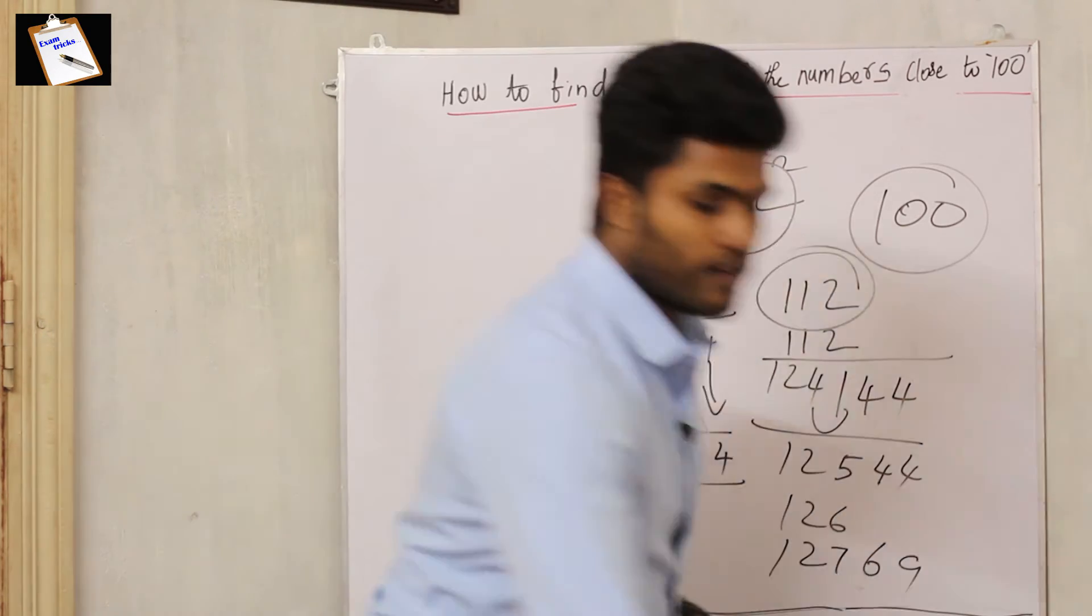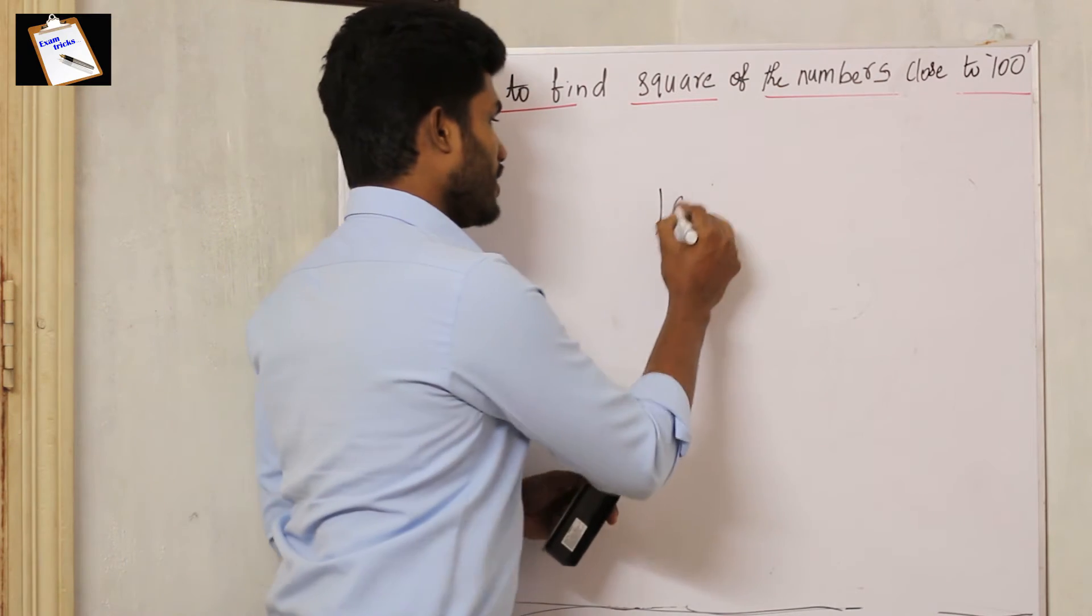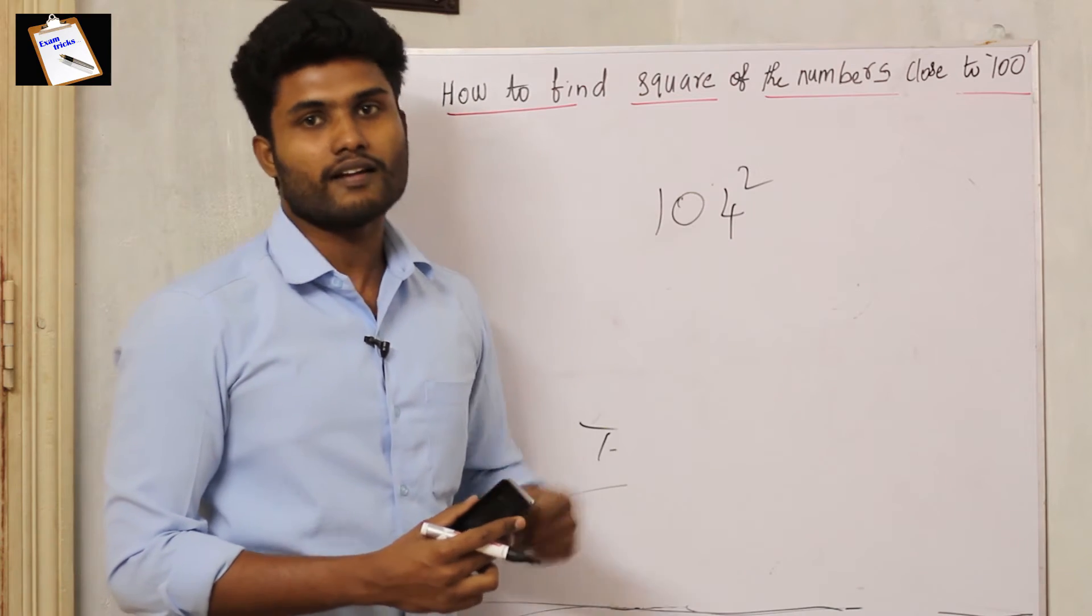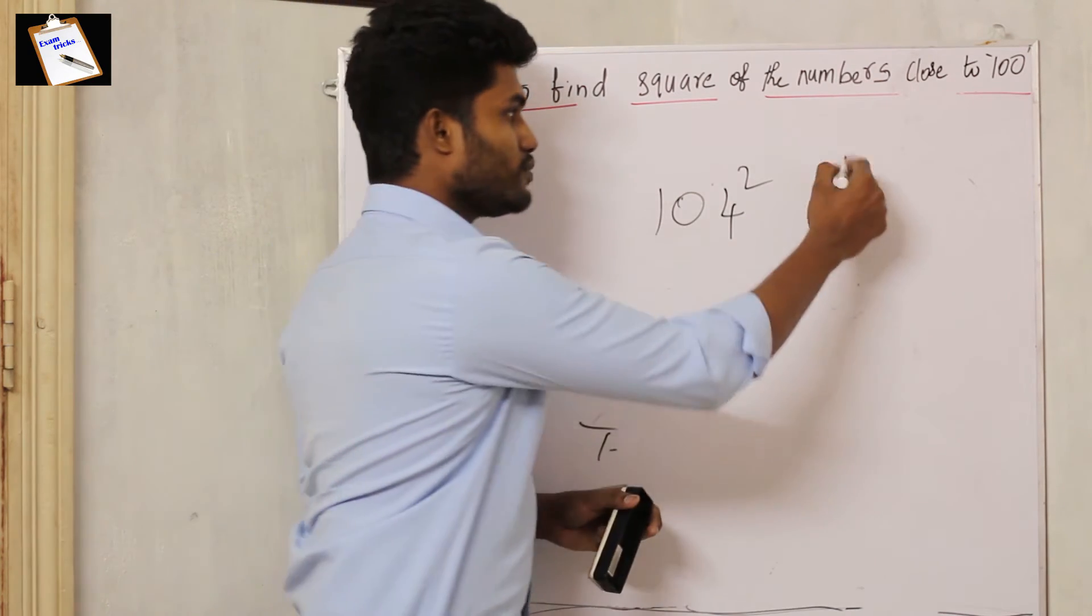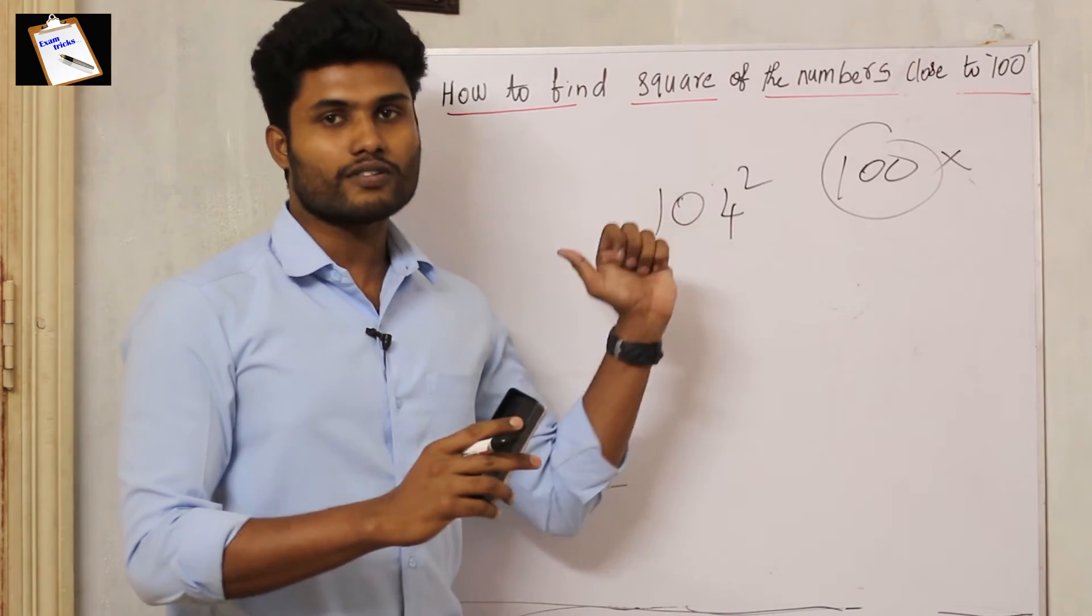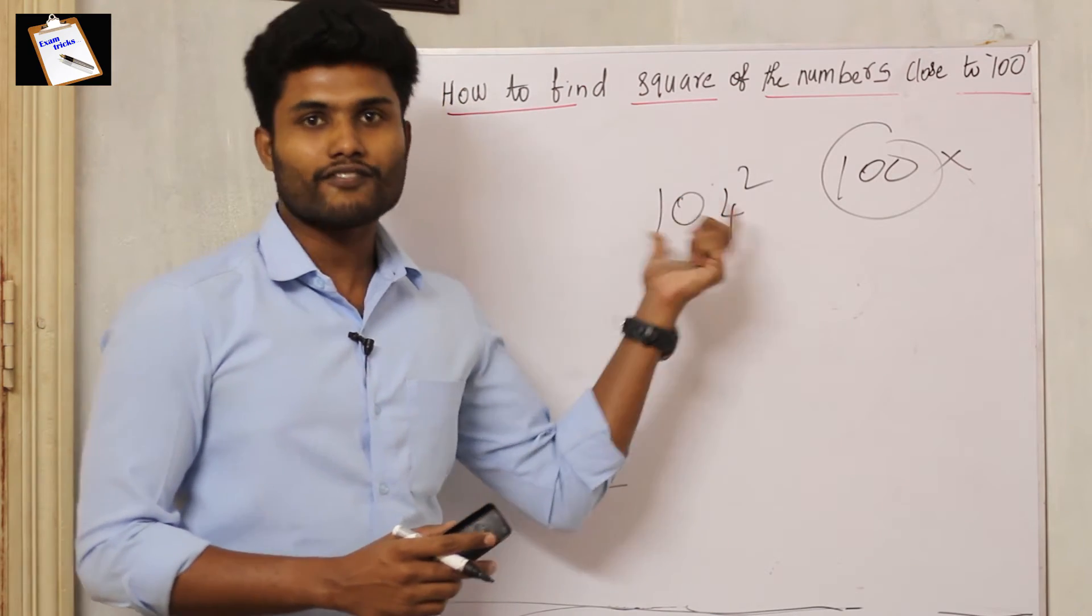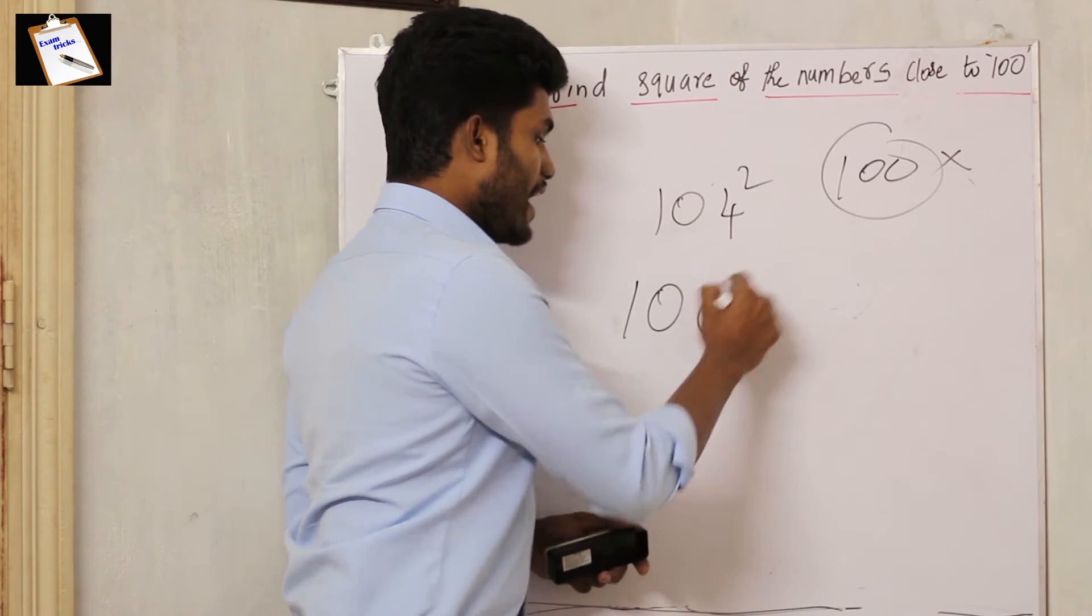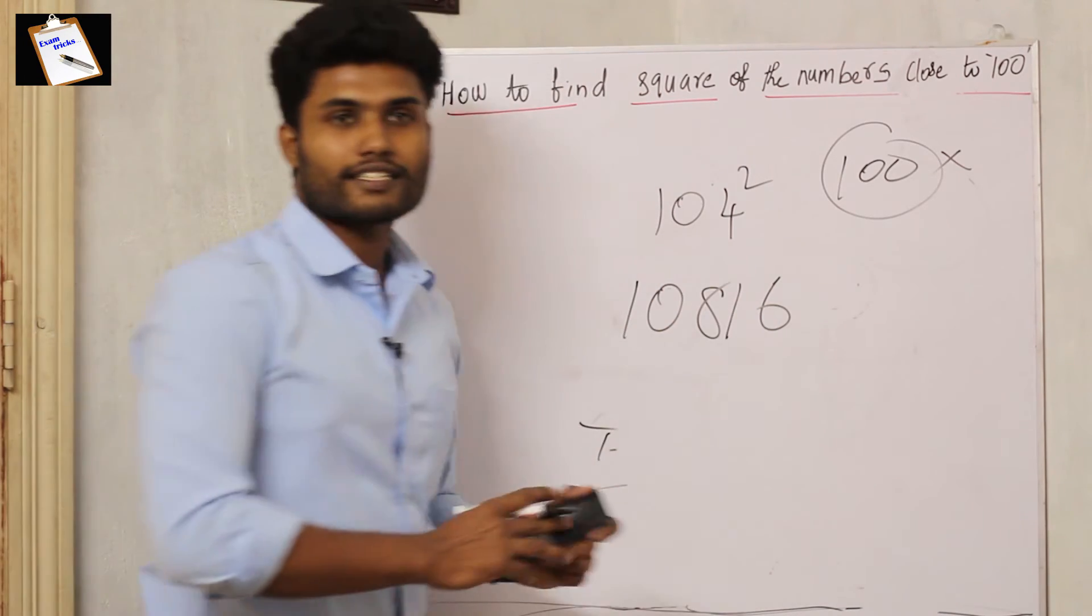We will see one more example of a number close to 100. For example, 104 square, very easy. The difference is 4, 104 plus 4 is 108, 4 square is 16. The answer is 10816, very good.